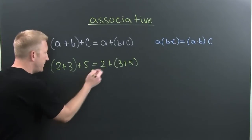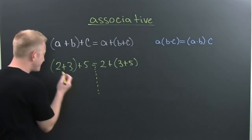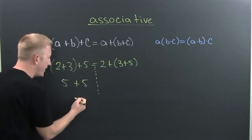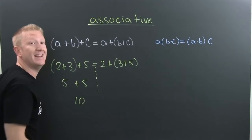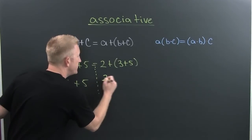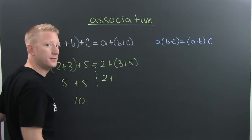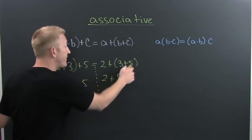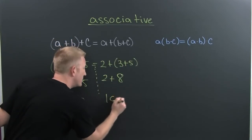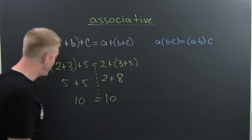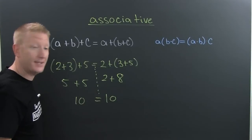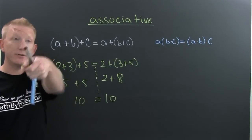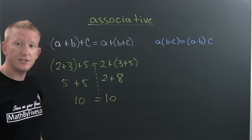Over here, 2 plus 3 is 5, plus 5 — that's going to be 10. Then over here we have 2 plus 8, because 3 and 5 is 8, and then 2 and 8 is also 10. And we see that here we get an identity. It's the associative property of addition.